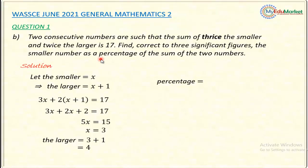So percentage will now be equals to the smaller number, which is 3, divided by the sum of the two numbers, which is 3 plus 4. 4 is the larger, while 3 is the smaller. So 3 over sum of the two numbers times 100% will give me the percentage of the smaller to the sum of the two numbers. So I'll continue. I'll have 3 over 7. 7 is from 3 add to 4, meaning sum of the two numbers, then times 100%.